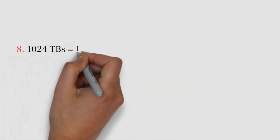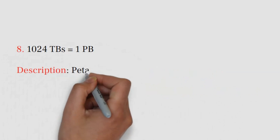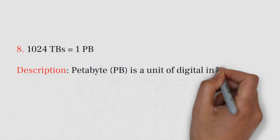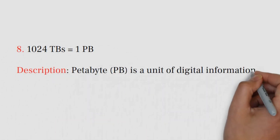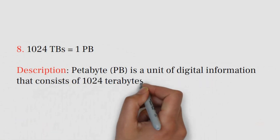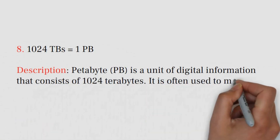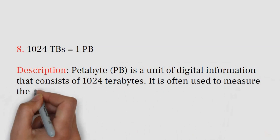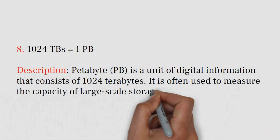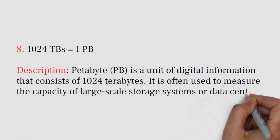Number 8: 1024 TBs equals 1 PB. Petabyte (PB) is a unit of digital information that consists of 1024 terabytes. It is often used to measure the capacity of large-scale storage systems or data centers.